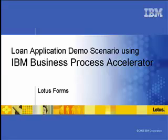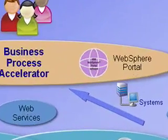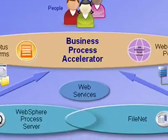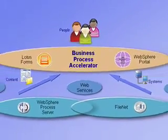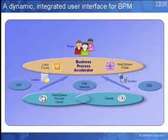The following demonstration will show how the IBM Business Process Accelerator enhances an existing loan application process through a dynamic, integrated user interface, combining the power of WebSphere Portal and Lotus Forms with a process engine. This offering helps organizations across all industries to speed up their process automation efforts and extend forms-based business processes to customers and employees through the internet.